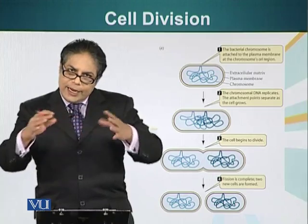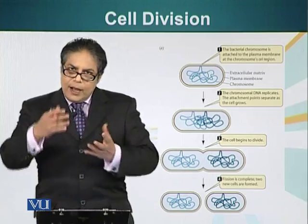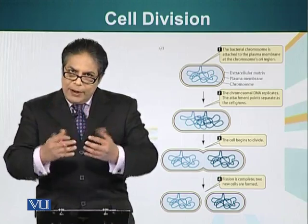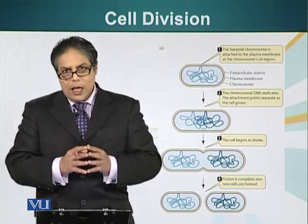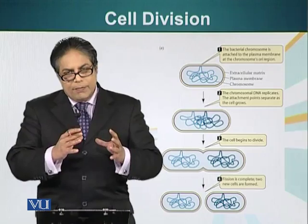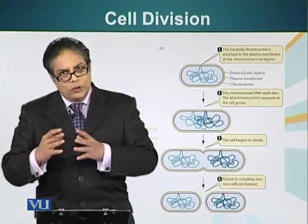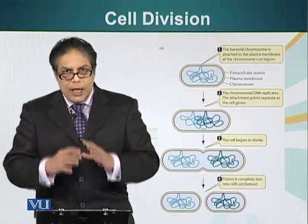Once the DNA replication is complete, a cell wall and membrane will form, which will separate the two cells. So initially we had one cell, and from one cell we have gone to two cells in this process.